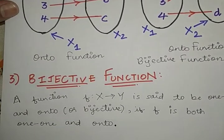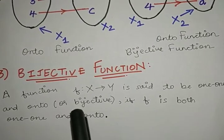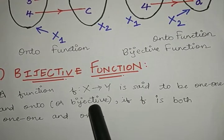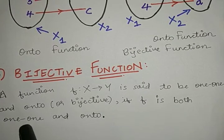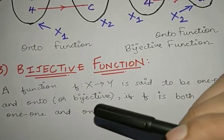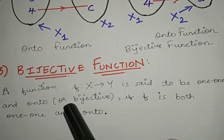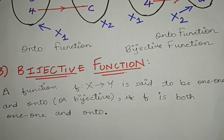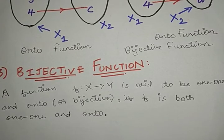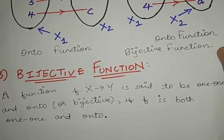Let us now look at what we mean by bijective function. A function f from x to y is said to be one-one and onto or bijective if f is both one-one and onto. If a function f from x to y is both one-one and onto then it is called a bijective function. That is it in the video — if you liked my video please hit the like button and subscribe to my channel. I will see you guys in the next video.